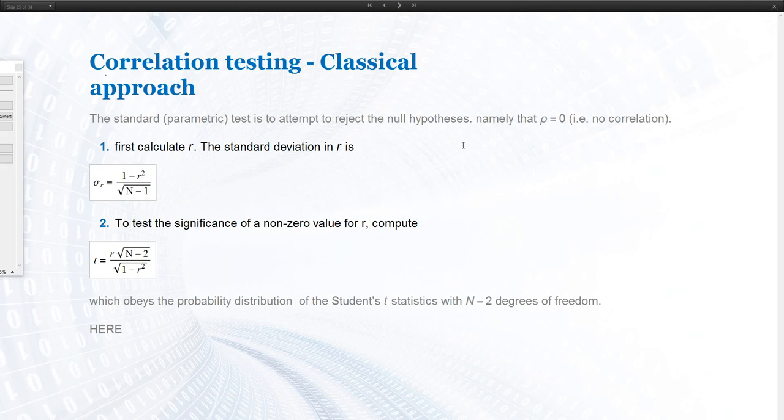If we want to test the correlation classically, and again the difference here then is that in all our classical hypothesis tests, we assume we know the values of the population. That's the null hypothesis.